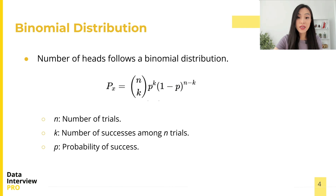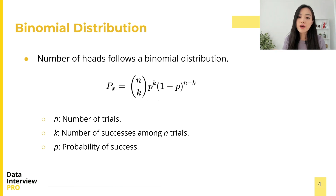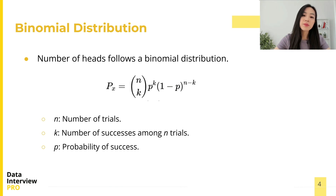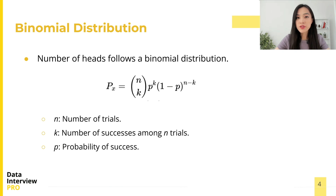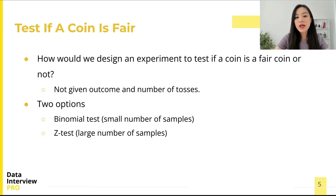The number of heads across multiple coin flips follows a binomial distribution because they have a binary outcome and each flip is independent. We can refer to the number of flips as the number of trials n, and the probability of heads as the probability of success p.